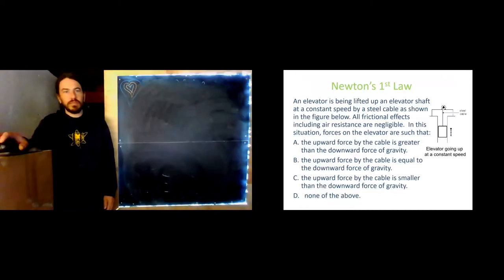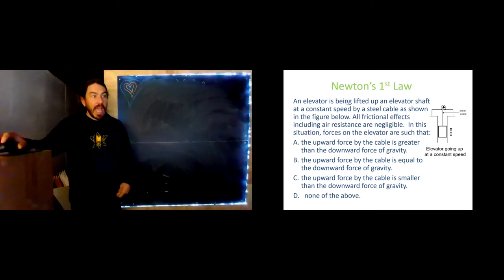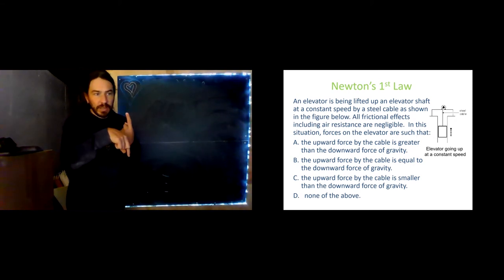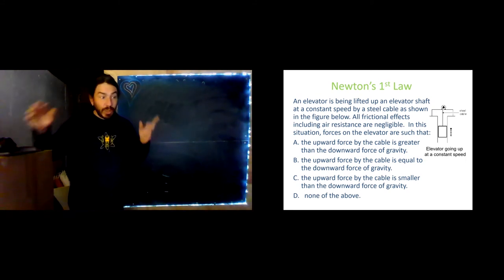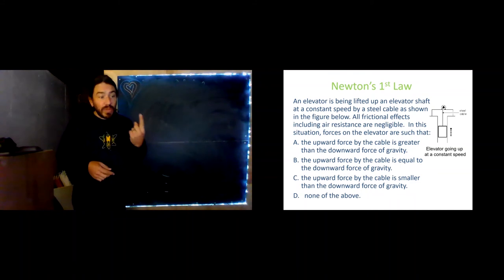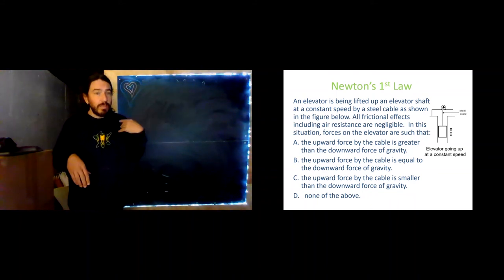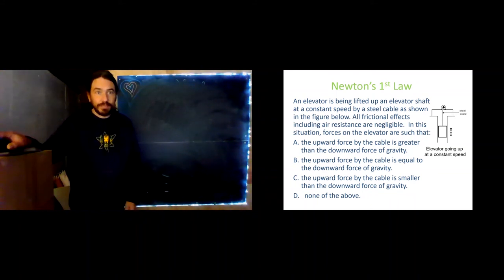Let's do a real quick example. Okay, there's a lot of words here. That's all right. We'll take them one at a time. An elevator is being lifted up an elevator shaft at a constant speed by a steel cable as shown in the figure below. It's not below, it's to the right. I'm talking about this figure right here. All frictional effects, including air resistance, are negligible. Negligible means we don't need to account for them. So, there's no friction and no air resistance. In this situation, the forces on the elevator are such that: A, the upward force by the cable is greater than the downward force of gravity. Or is the upward force of the cable equal to the downward force of gravity? Or is the upward force of the cable smaller than the downward force of gravity? Or none of the above? Why don't you pause the video, think about it, and I'll see you on the other side.